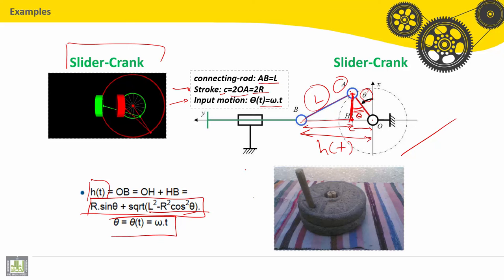So we can find that AH squared plus BH squared is equal to AB squared. Then BH squared is equal to AB squared minus AH squared.